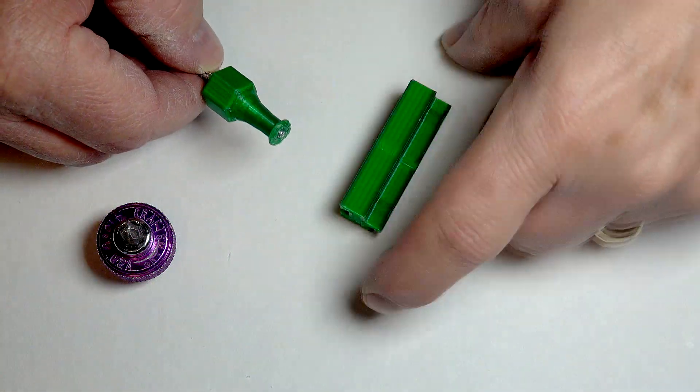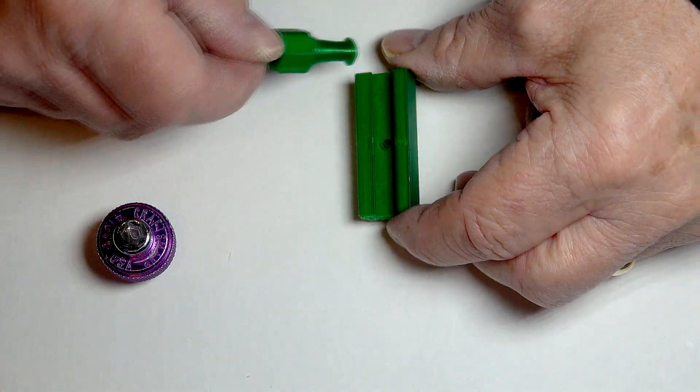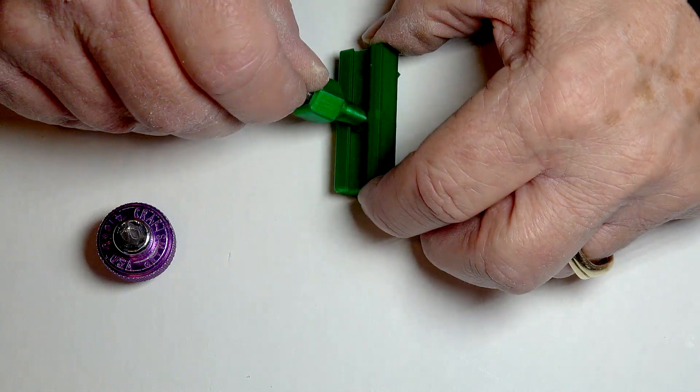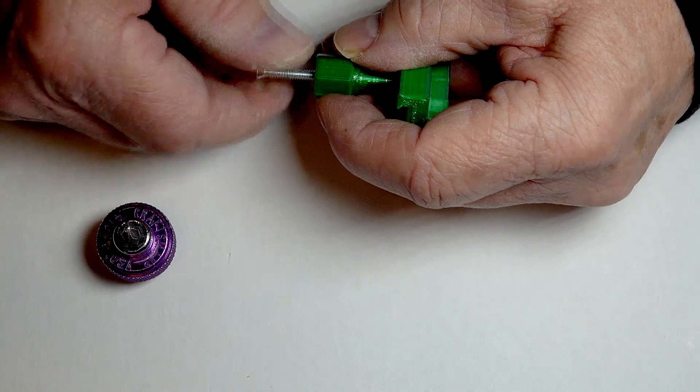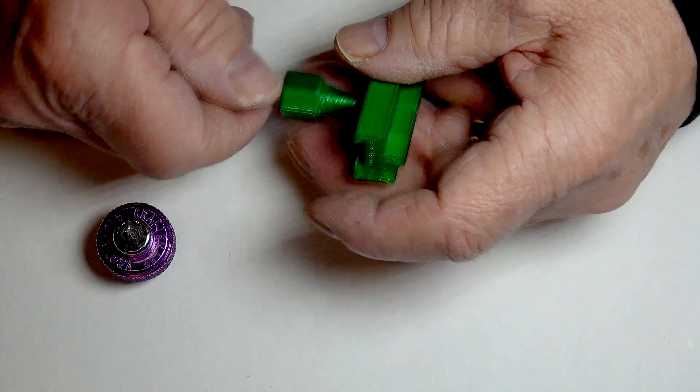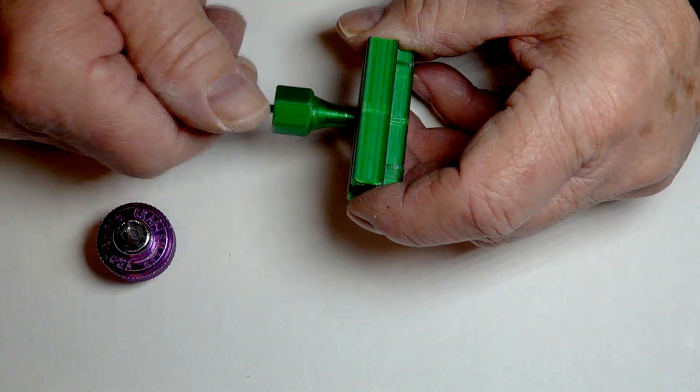Slide the knob into the dovetail-like slot in the jaw, aligning the screw with the hole in the jaw. Screw the machine screw through the jaw until it is about one eighth of an inch out of the jaw.